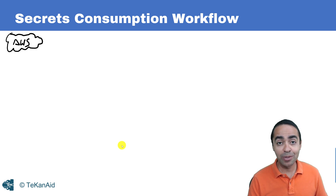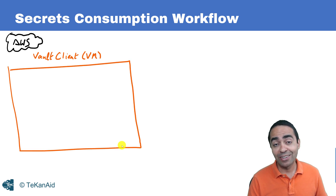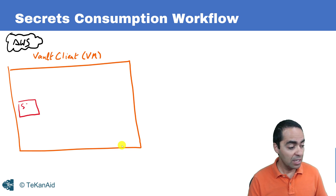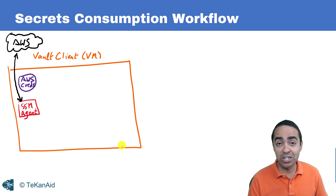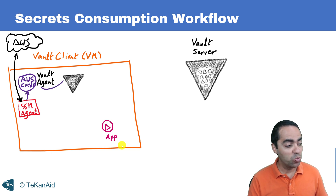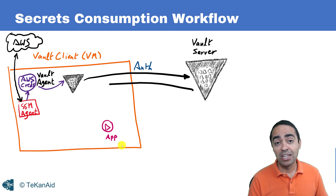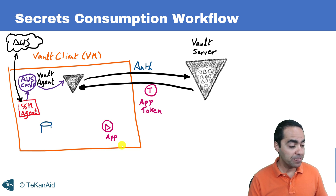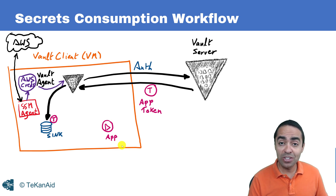The secrets consumption workflow works as follows: you have a VM — Linux or Windows — living outside of AWS, say in vSphere. The SSM agent runs on it, talks to AWS, and continuously renews and updates AWS credentials in a file. Your application also lives in that VM. We can add a Vault agent as well, which authenticates on behalf of the application. The Vault agent retrieves the AWS credentials from that file, authenticates into the Vault server using the AWS auth method, retrieves an app token, and drops that token into a sink file.